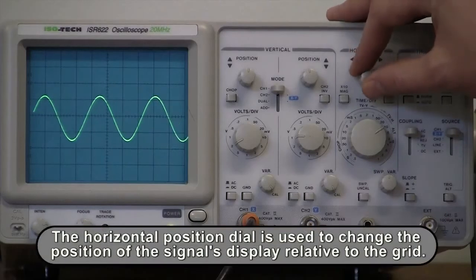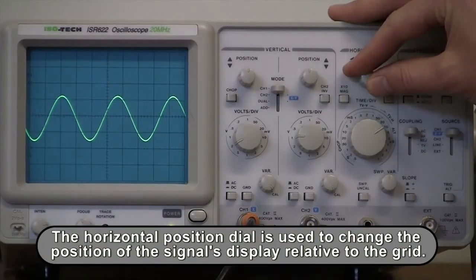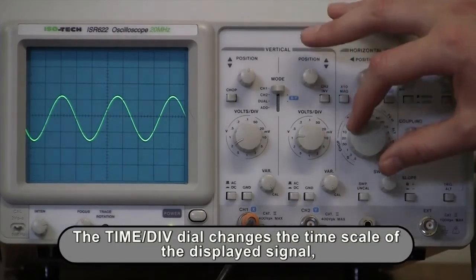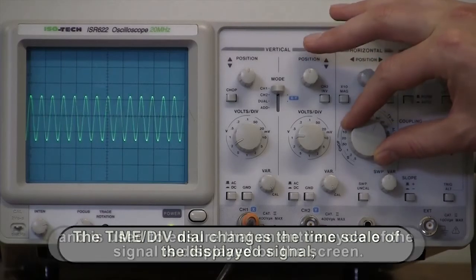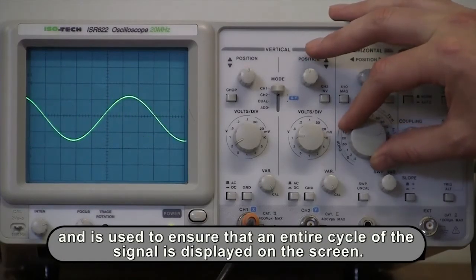The horizontal position dial is used to change the position of the signal's display relative to the grid. The time per division dial changes the time scale of the displayed signal, and is used to ensure that an entire cycle of the signal is displayed on the screen.